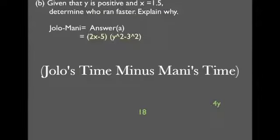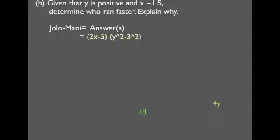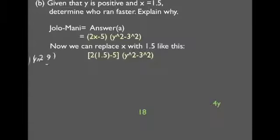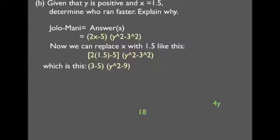Jolo minus Mani is answer A. Now, we can replace x with 1.5 like this. Which is the same as 3-5, which is the same as negative 2.